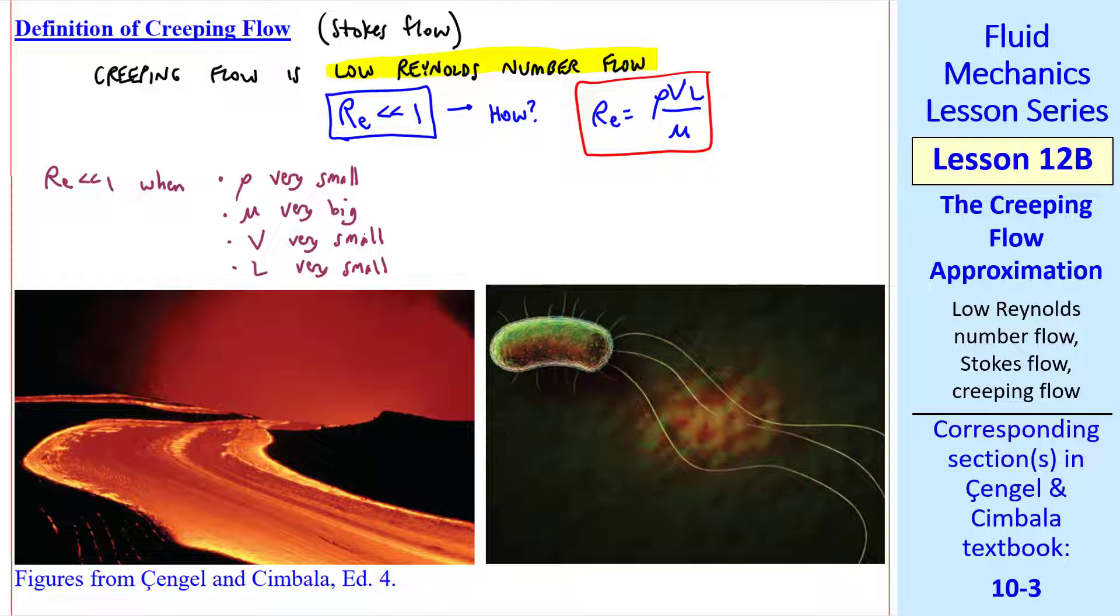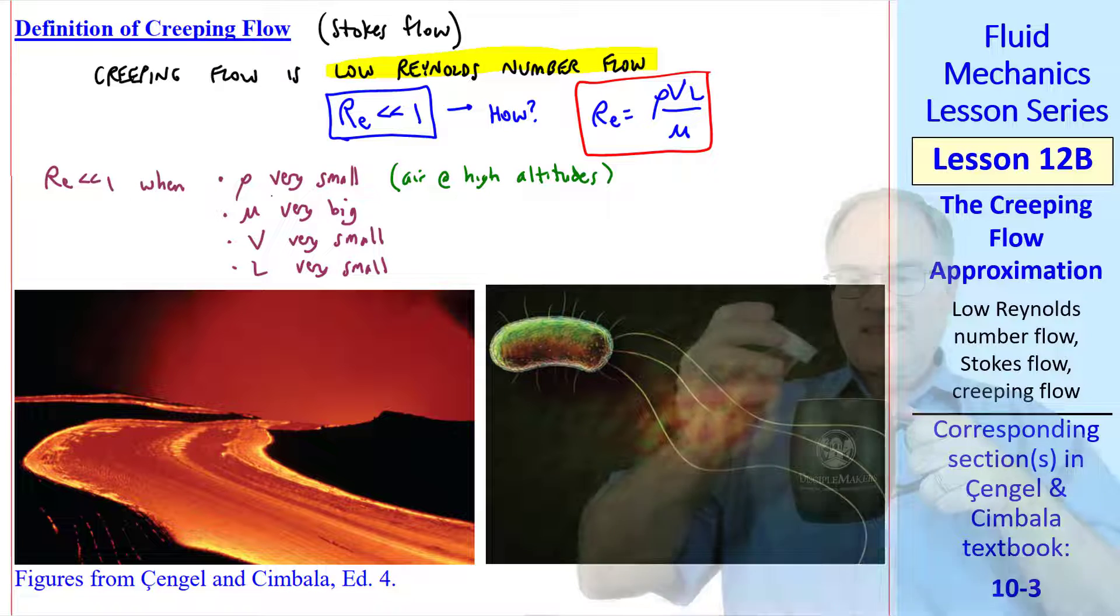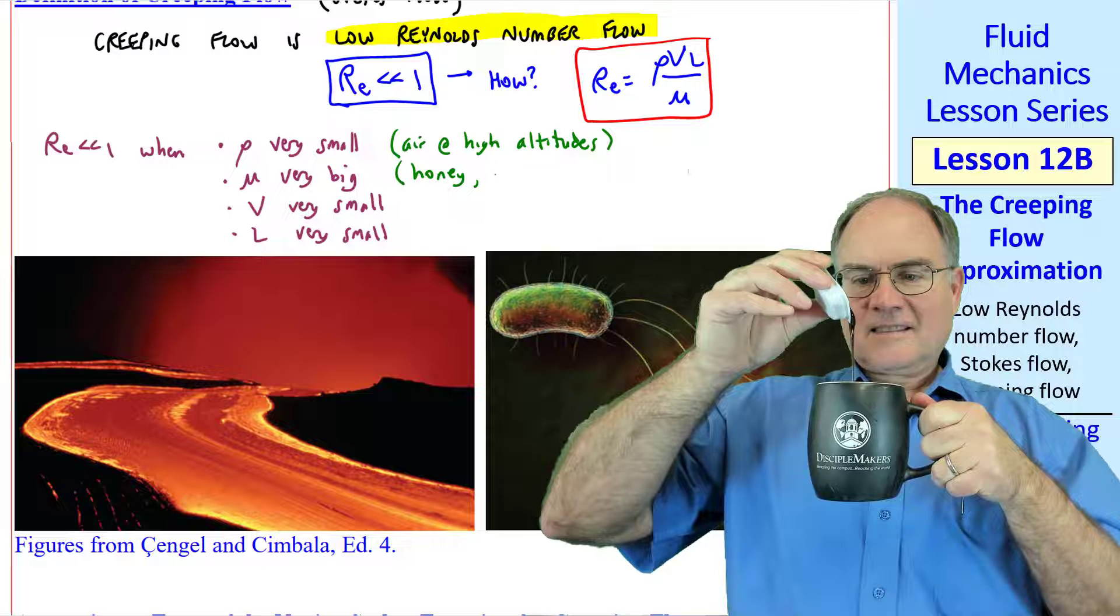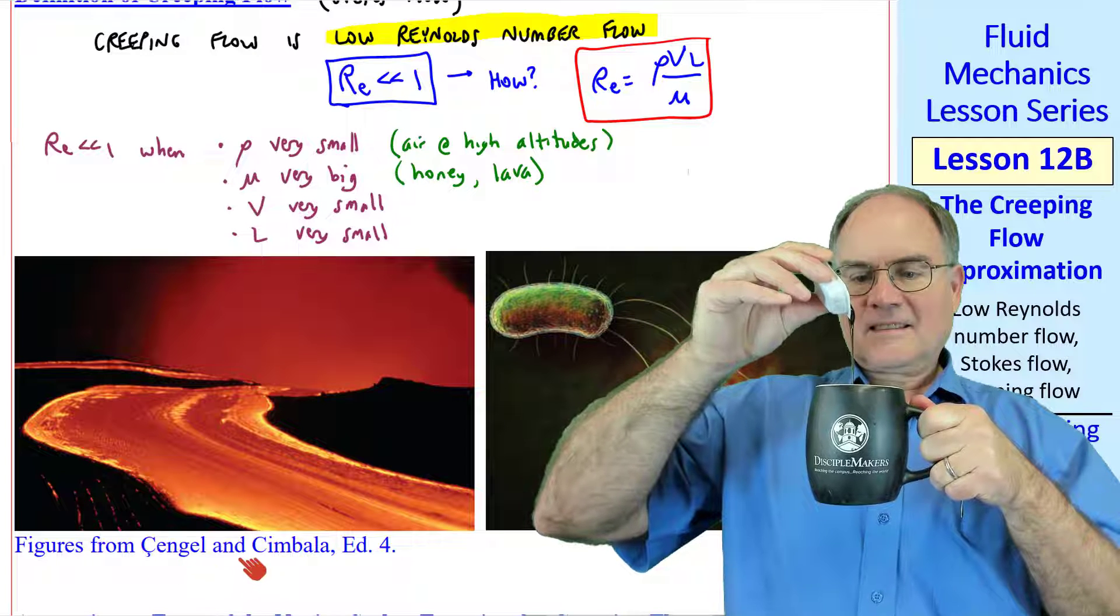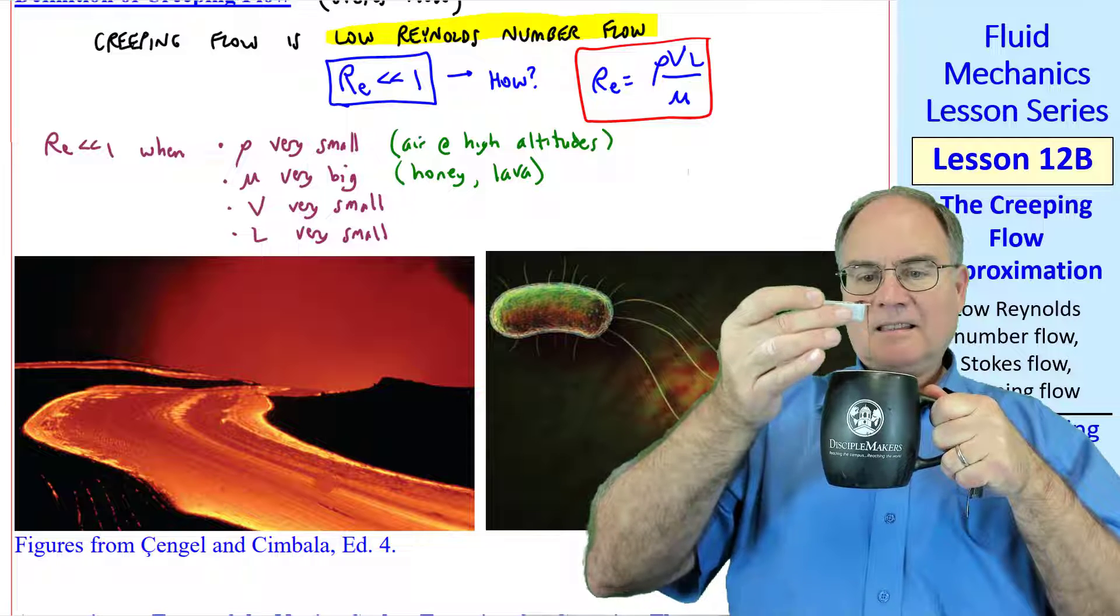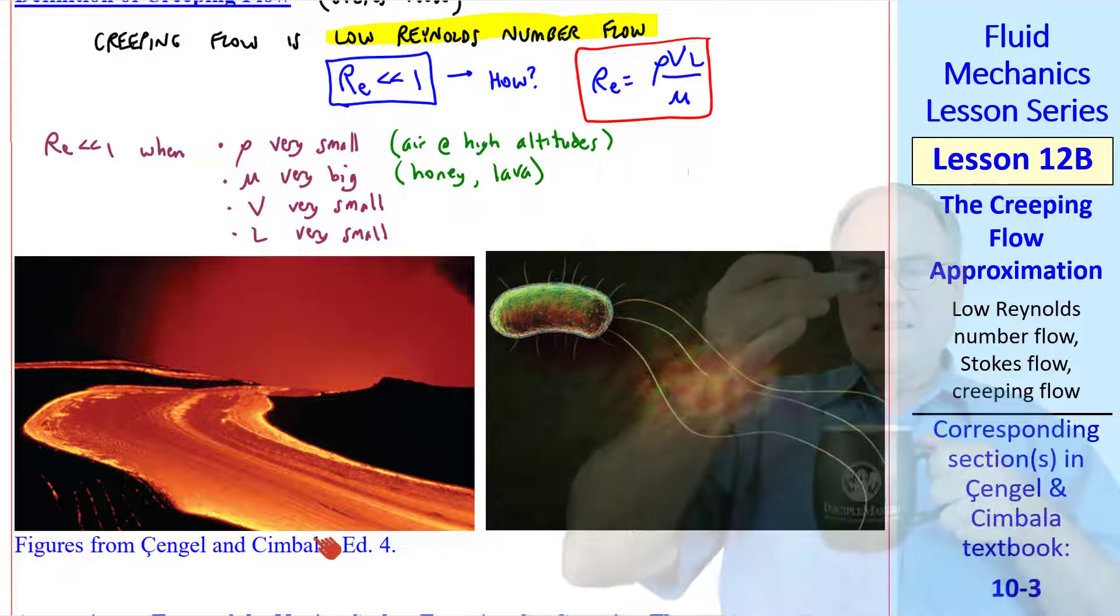An example of the first case is if you go up at very high altitudes, near the edge of the atmosphere. Then the density is very small. An example of large viscosity is flow of honey or lava, as in this picture. The viscosity of molten rock is so huge that even though this is a large length scale, this is still a creeping flow.